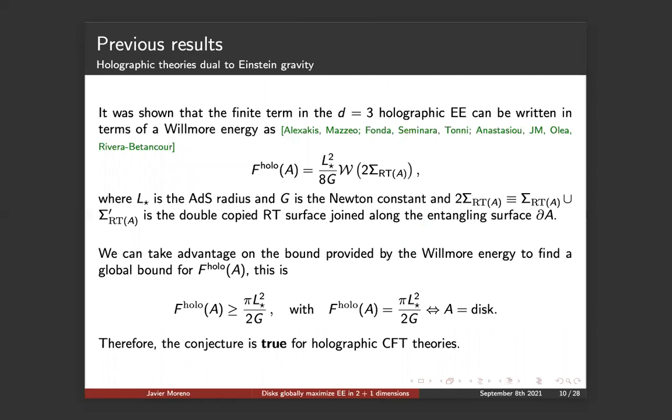So what I was saying is that it was shown that the finite term of holographic entanglement entropy in three-dimensional CFTs can be written in terms of the Wilmore energy, as this expression here. As we require a closed surface, we need to make a double copy of the Ryu Takayanagi surface and then glue them along the entangling surface. So now, with this construction, we can take advantage of the bound provided by the Wilmore energy to find a global bound for the finite piece of entanglement entropy. And we can check indeed that in the case of the disk, it is globally minimized. So the conjecture we know already is true for holographic CFT series.